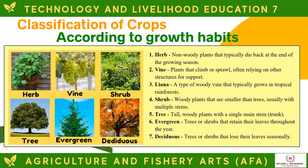The classification of crops according to growth habits: Herb — non-woody plants that typically die back at the end of the growing season. Vine — plants that climb or sprawl, often relying on other structures for support. Liana — a type of woody vine that typically grows in tropical rainforests. Shrub — woody plants smaller than trees, usually with multiple stems. Tree — tall, woody plants with a single main stem or trunk. Evergreen — trees or shrubs that retain their leaves throughout the year. Deciduous — trees or shrubs that lose their leaves seasonally.